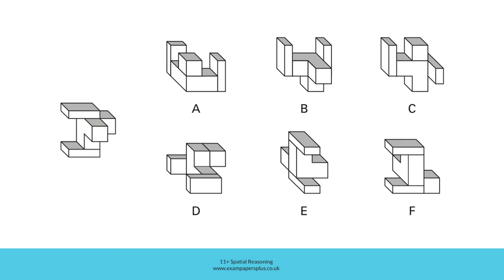Therefore E cannot be correct either. Now consider option F. Although the two cuboids are parallel, consider the position of the cube. The cube should be aligned with one corner of the L-shaped block — this edge should be level with this edge of the L-shape. But in F, this edge is level with the edge of the cuboid, and that's incorrect. It means that option B was indeed the right answer.